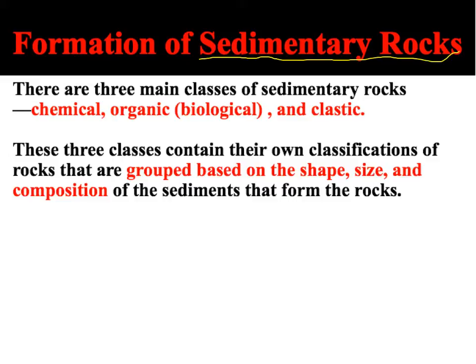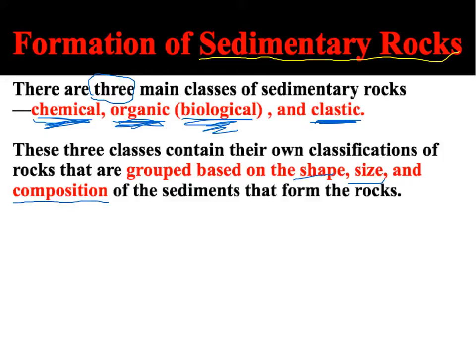The sedimentary rocks themselves have three main classes. In the igneous rocks, you needed to tell intrusive from extrusive and felsic from mafic, giving you four possibilities. Here in sedimentary rocks, you need to be able to identify them from three classes: chemical sedimentary rocks, organic — sometimes known as biological — sedimentary rocks, and clastic sedimentary rocks. Each class can be further broken down based on the shape, size, and composition of the sediments.